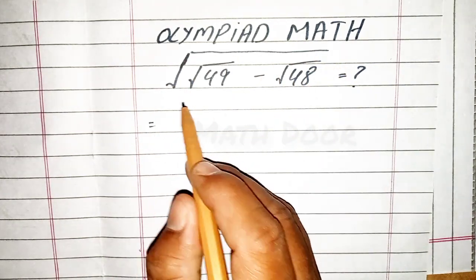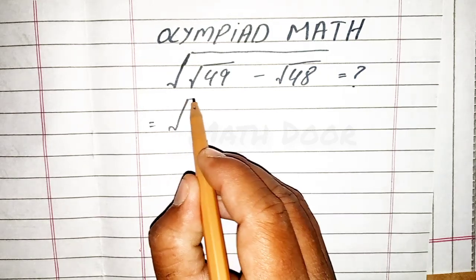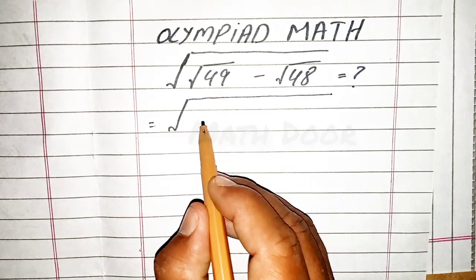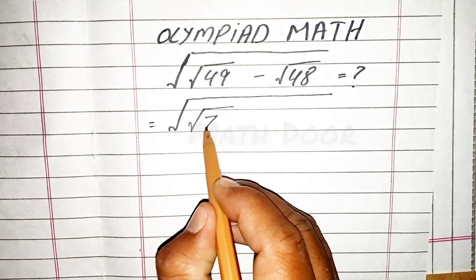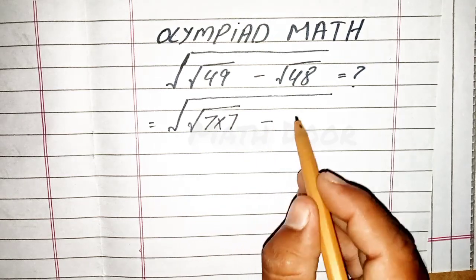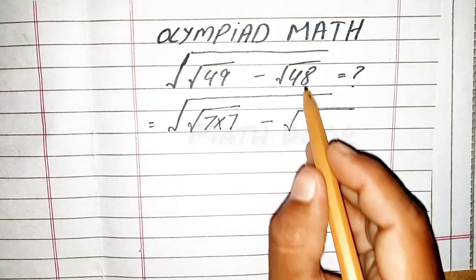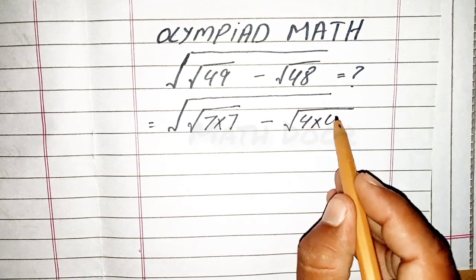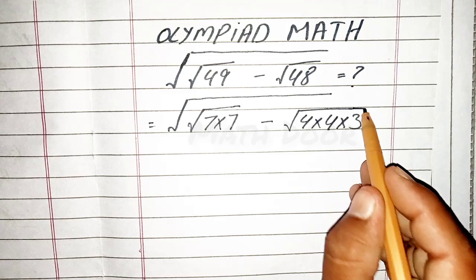First of all, we can write this equation like: we write 49 as 7 multiply by 7, minus 48 which we write as 4 multiply by 4 multiply by 3.